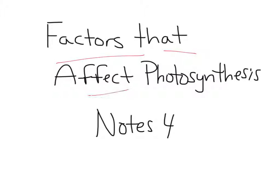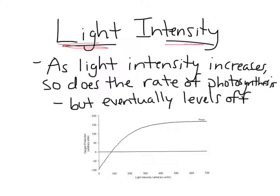Factors that affect photosynthesis, notes 4. So light intensity is one factor that affects the rate of photosynthesis. So we're looking at rate of photosynthesis here.